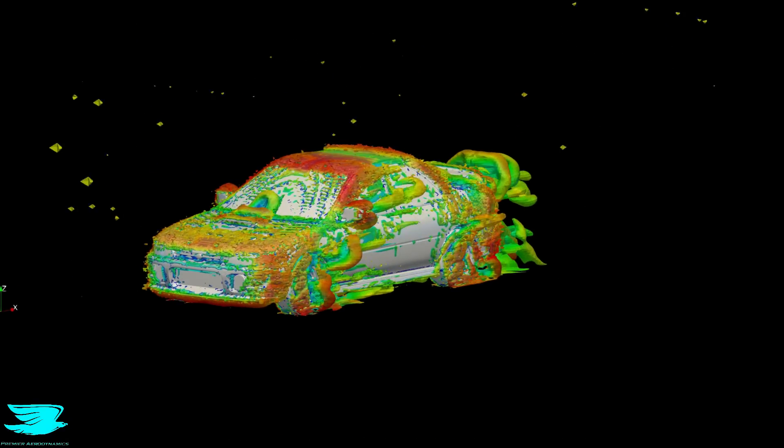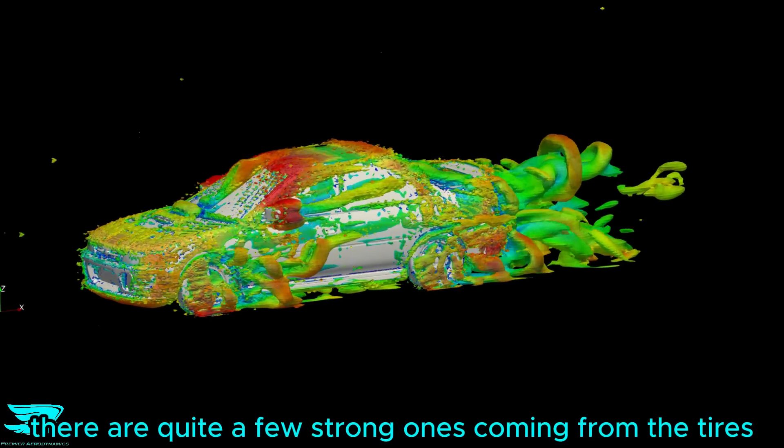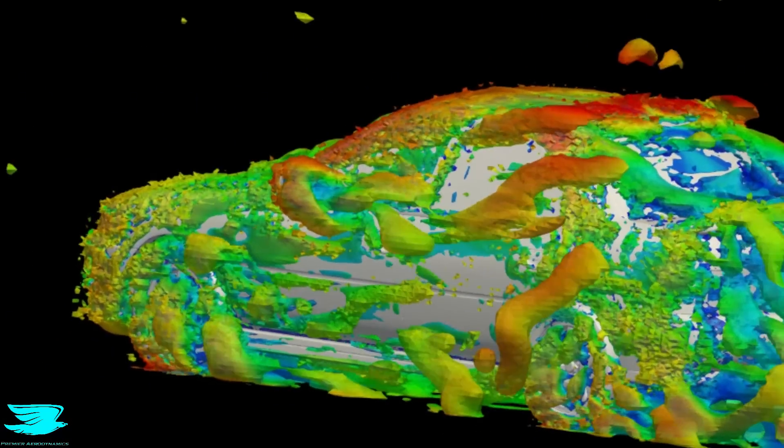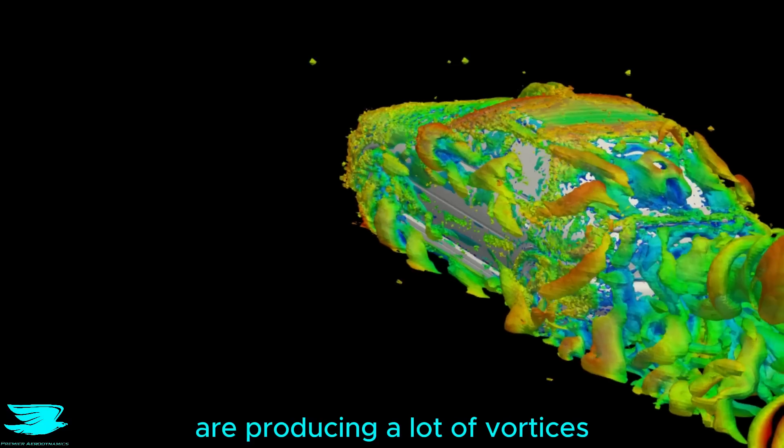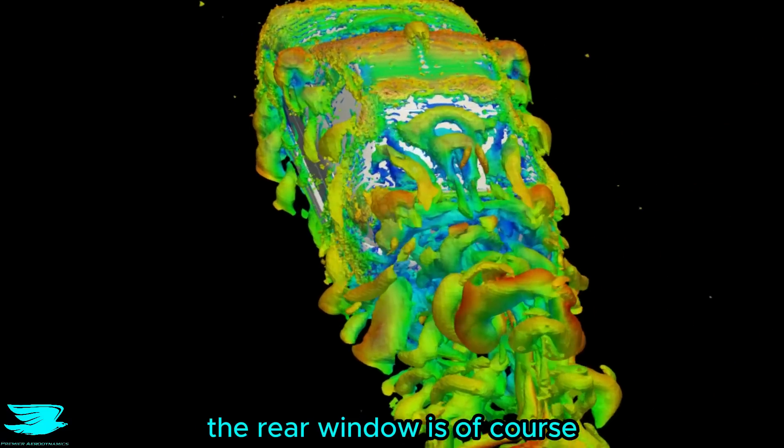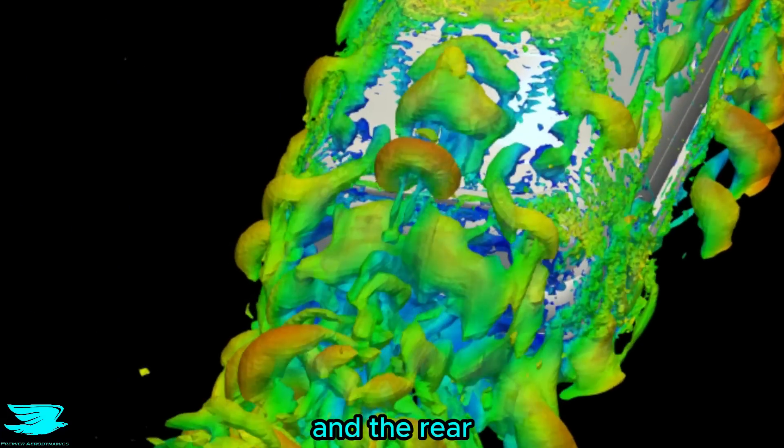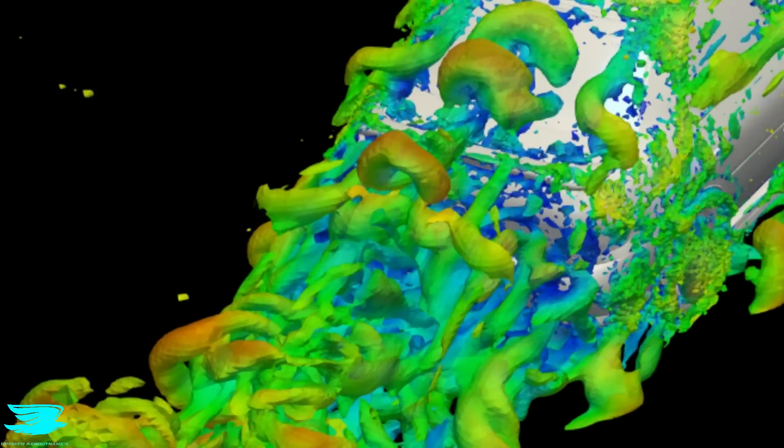Looking at the vortices created, there are quite a few strong ones coming from the tyres, but also the A pillars, again, because the roof is too boxy. And even the side mirrors are producing a lot of vortices. The rear window is, of course, producing vortices as the flow separates. The rear wing kicks the flow up and the rear is accompanied by familiar vortices we usually see.